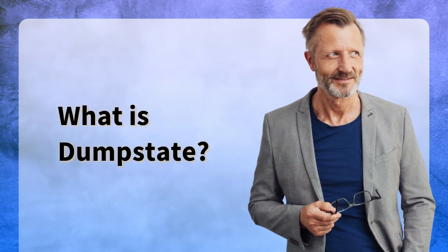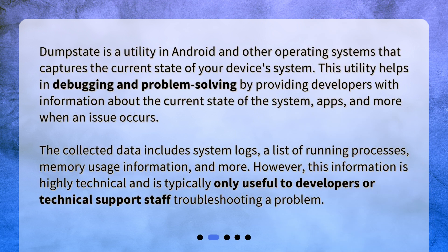What is dump state? Dump state is a utility in Android and other operating systems that captures the current state of your device's system. This utility helps in debugging and problem solving by providing developers with information about the current state of the system, apps, and more when an issue occurs. The collected data includes system logs, a list of running processes, memory usage information, and more. However, this information is highly technical and is typically only useful to developers or technical support staff troubleshooting a problem.